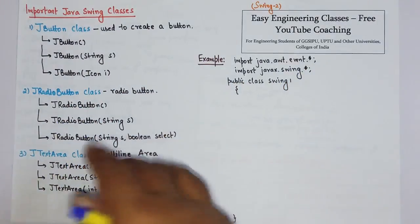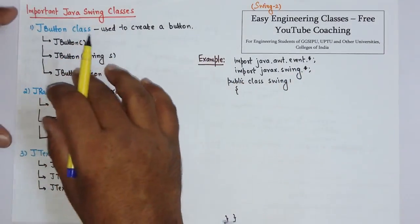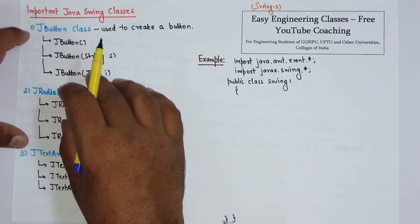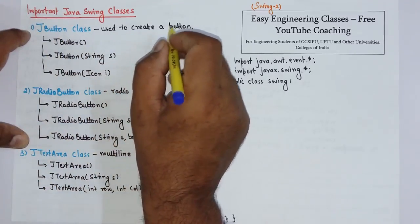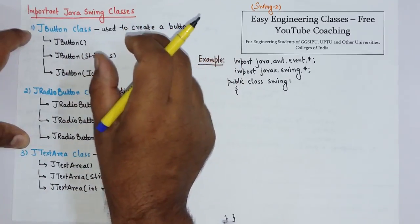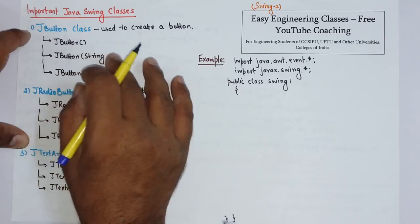So we will see different constructors of all the three classes of Swing and simple examples using all the constructors. The first class is JButton class. JButton class is used to create a button and the look and feel of this button is platform independent.